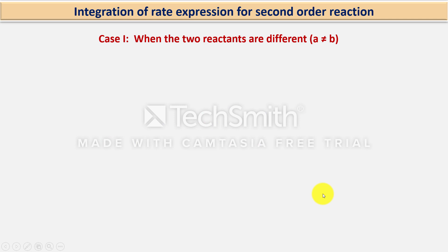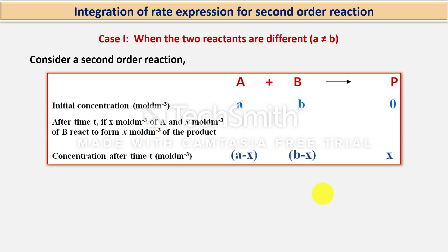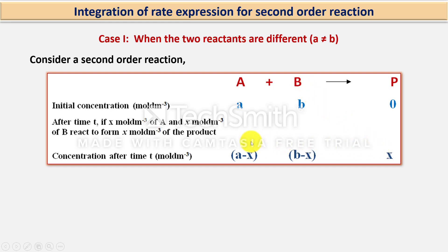In second order reaction, let us take the first case, that is when the two reactants are different — when A is not equal to B. Consider a general reaction in which reactant A reacts with reactant B to give product. Let A mole per dm³ be the initial concentration of reactant A and B mole per dm³ be the initial concentration of reactant B. After time T, if x mole per dm³ of product is formed, the remaining concentration of A will be A minus x and that of B will be B minus x.